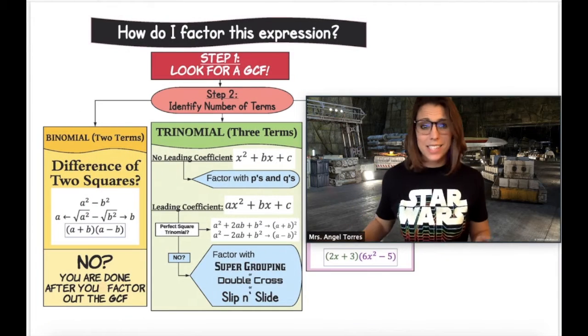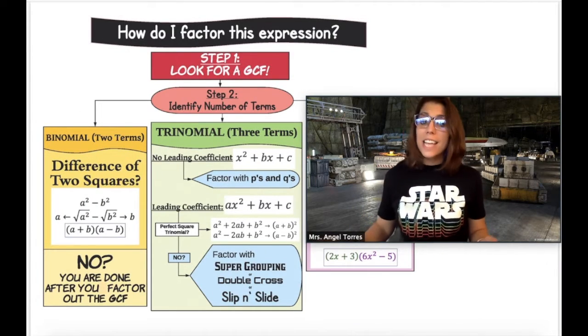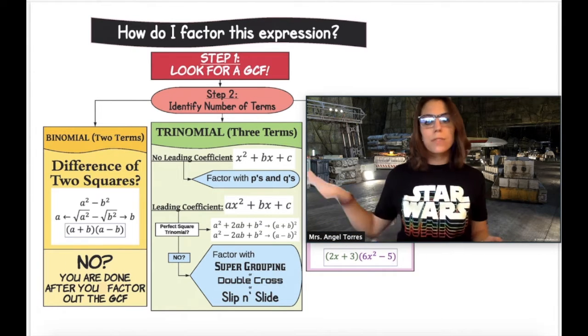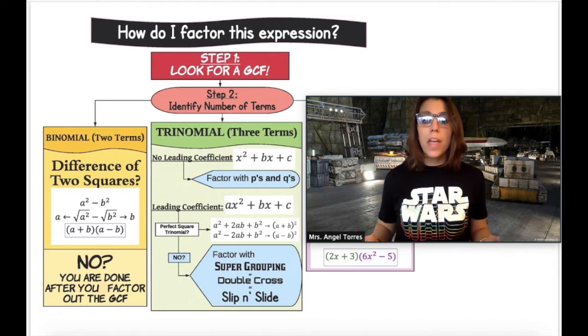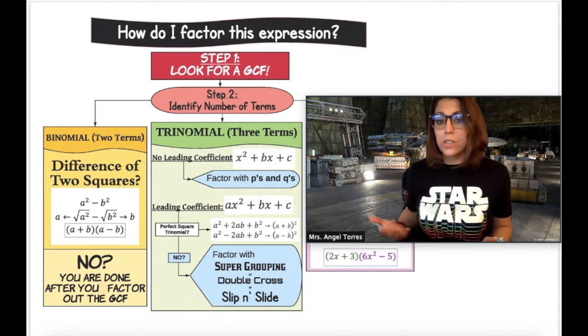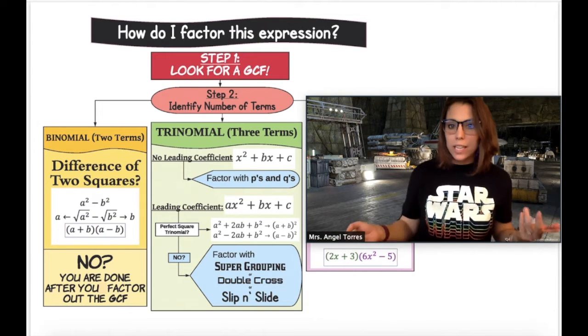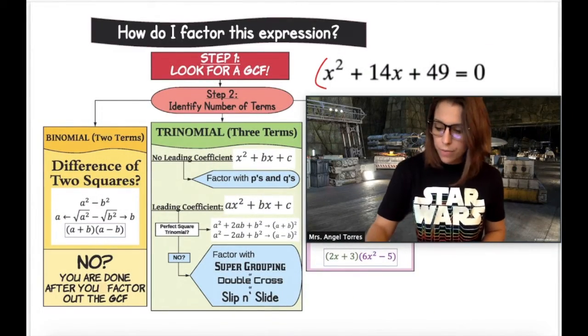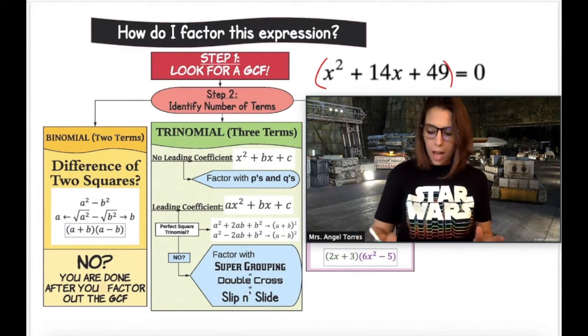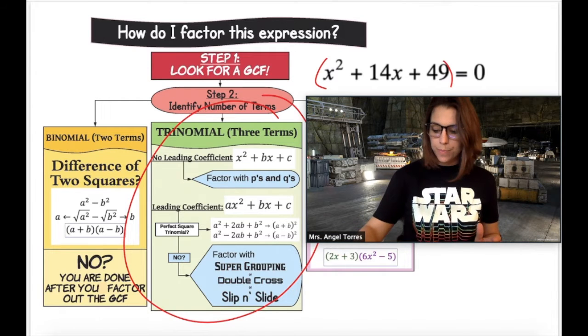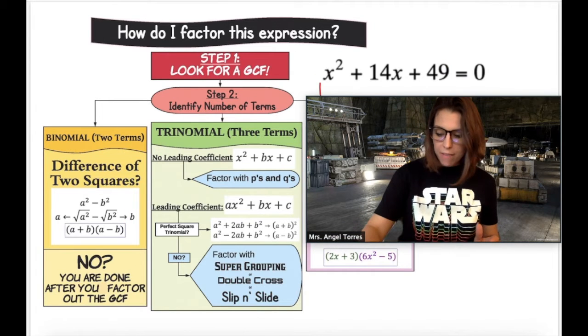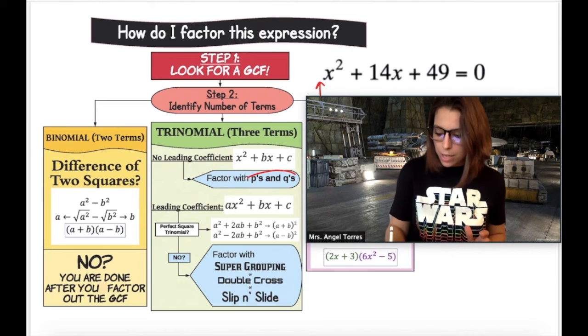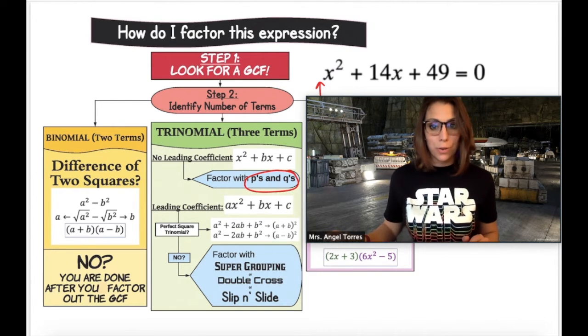So there are a lot of methods that we could use for factoring. In this case with quadratics, you will never see a quadratic that has more than three terms, so we don't have to worry about the four-term polynomial. However, we may be given quadratics that are binomials or trinomials. Let's take a look at the quadratic from example one. So looking at this expression here, this is a trinomial. So automatically, I'm looking at the green box. Does this trinomial have a leading coefficient? No, which means the method that we're going to use to factor this is our P's and Q's.